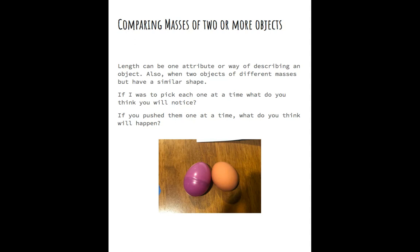I first wanted to start with how do we look at different attributes or different characteristics of objects. One way we can do that is looking at length. Looking at different lengths of objects can be one attribute of a way to describe an object.